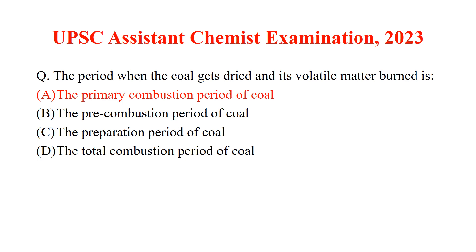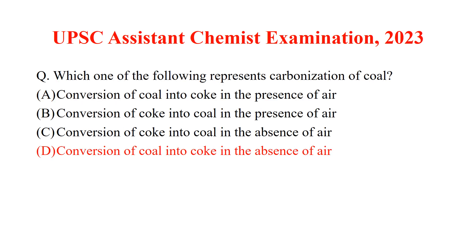Then coke will be converted into carbon dioxide — this is known as the secondary combustion period. The next question: which one of the following represents carbonization of coal? If we heat coal in the presence of air, it will be converted into carbon dioxide. So for converting coal into coke, we have to heat the coal in the absence of air.